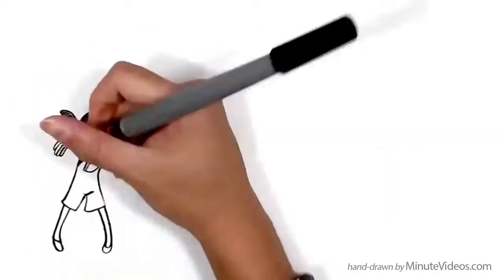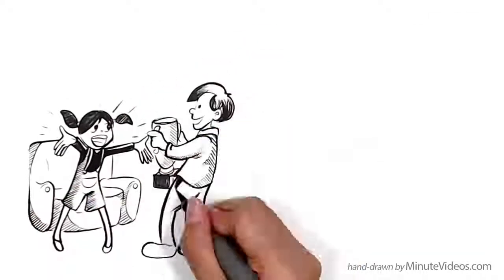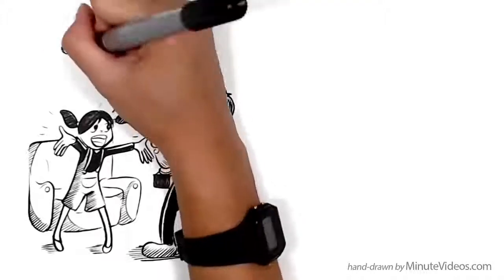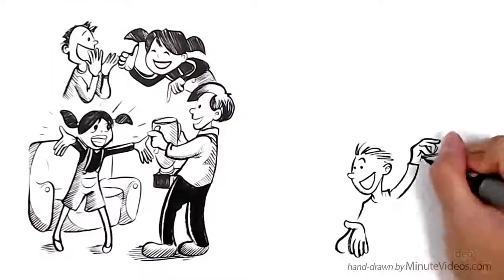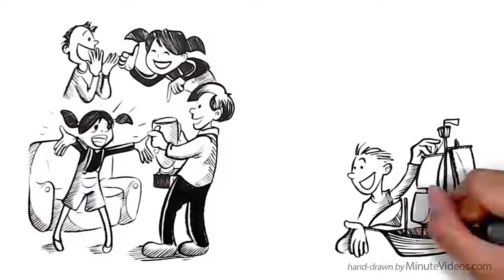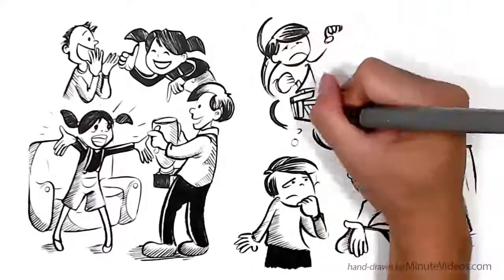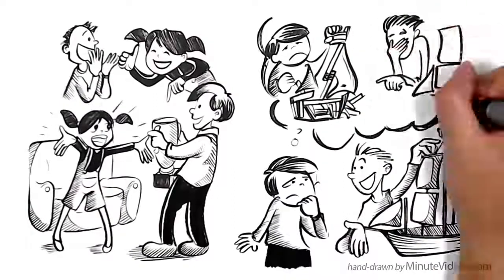Ann likes to see others succeed. It inspires her. She knows that if she motivates her friends to get better, she herself is likely to grow too. If his friends try new things and succeed, Jay feels threatened. He's afraid that their success will put pressure on him to do more with his life too.